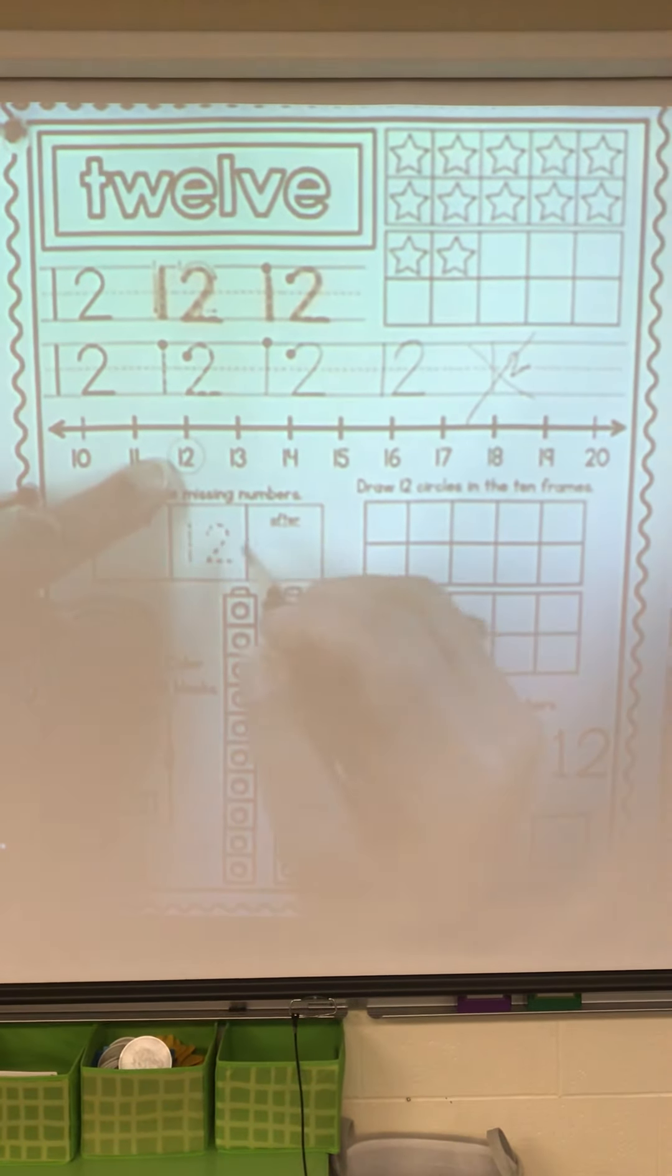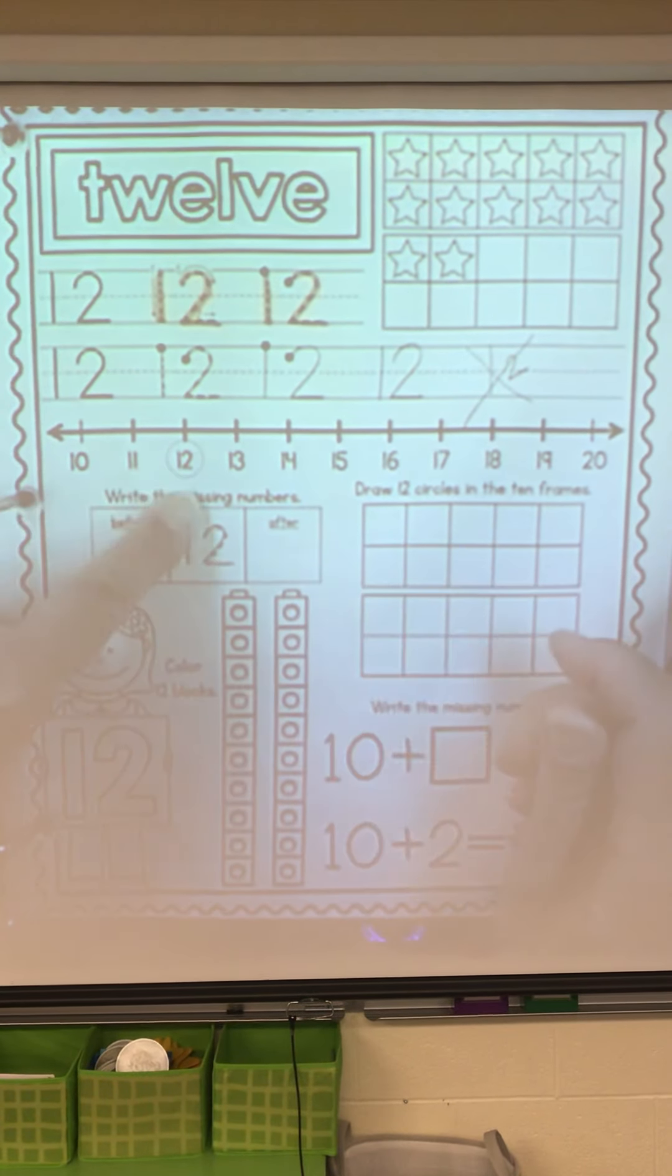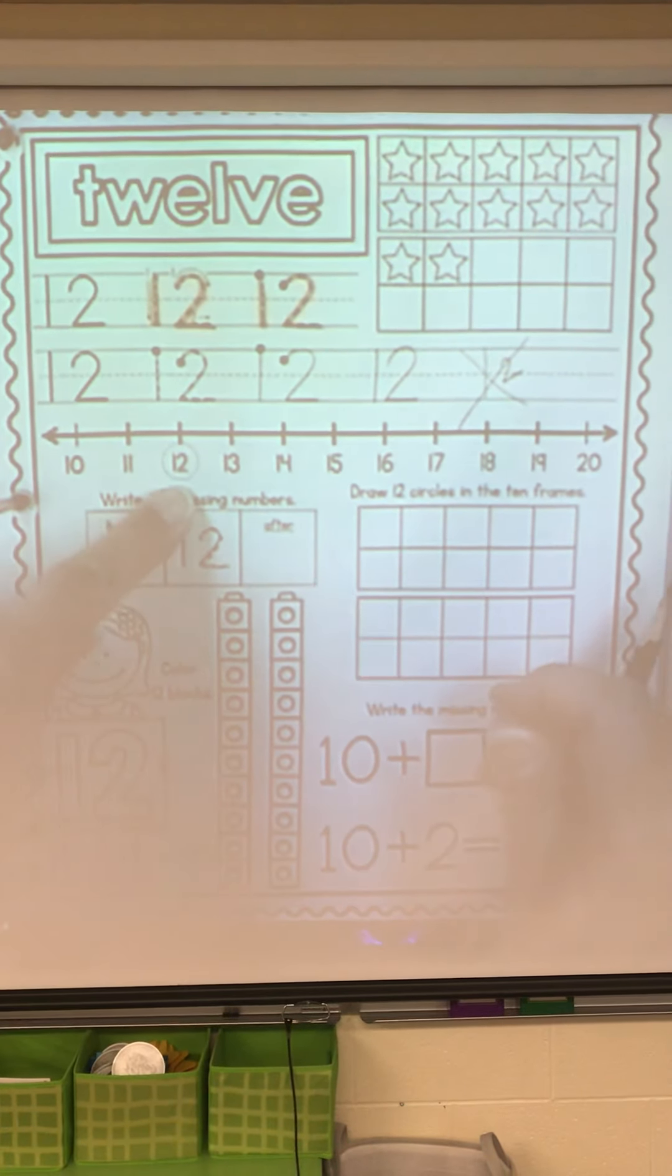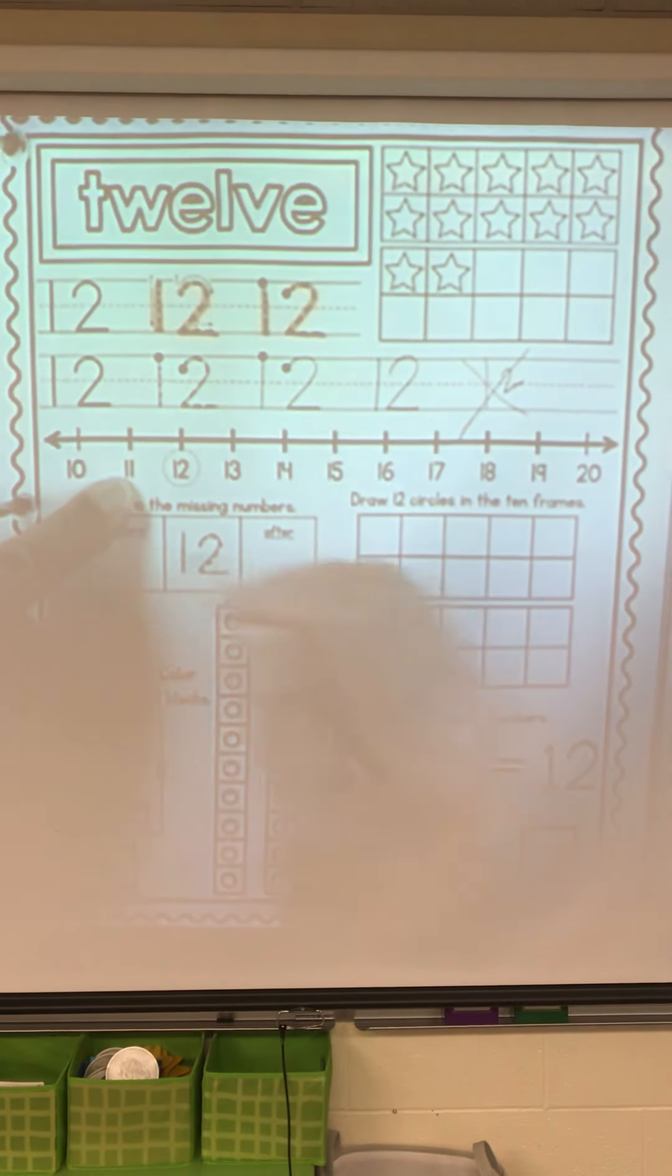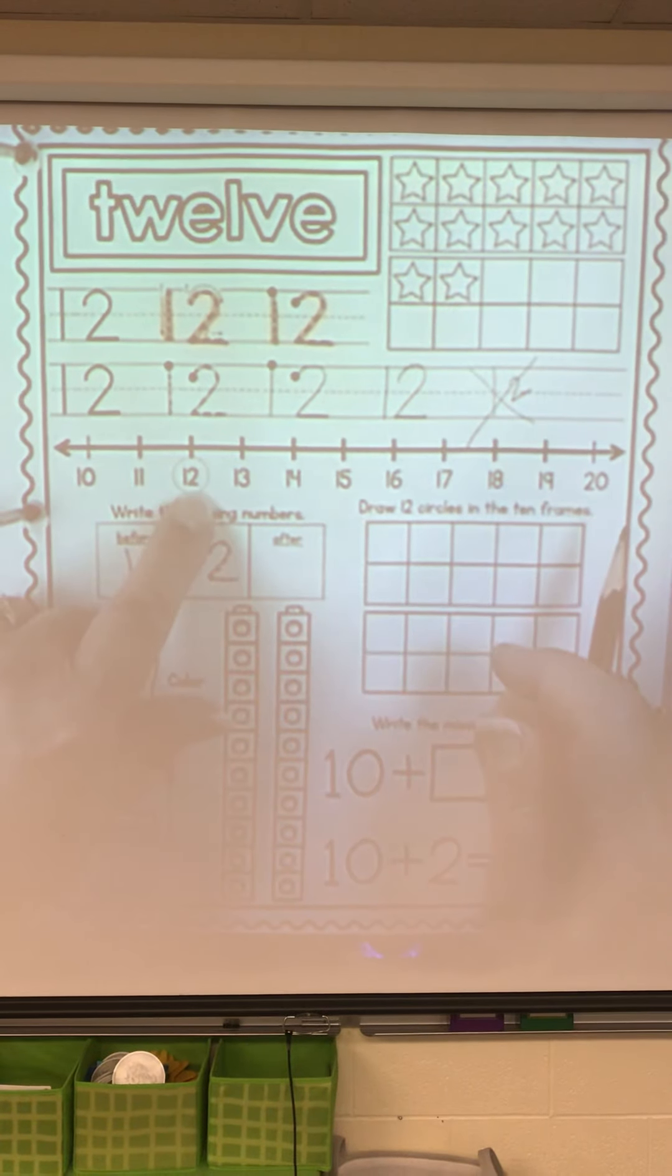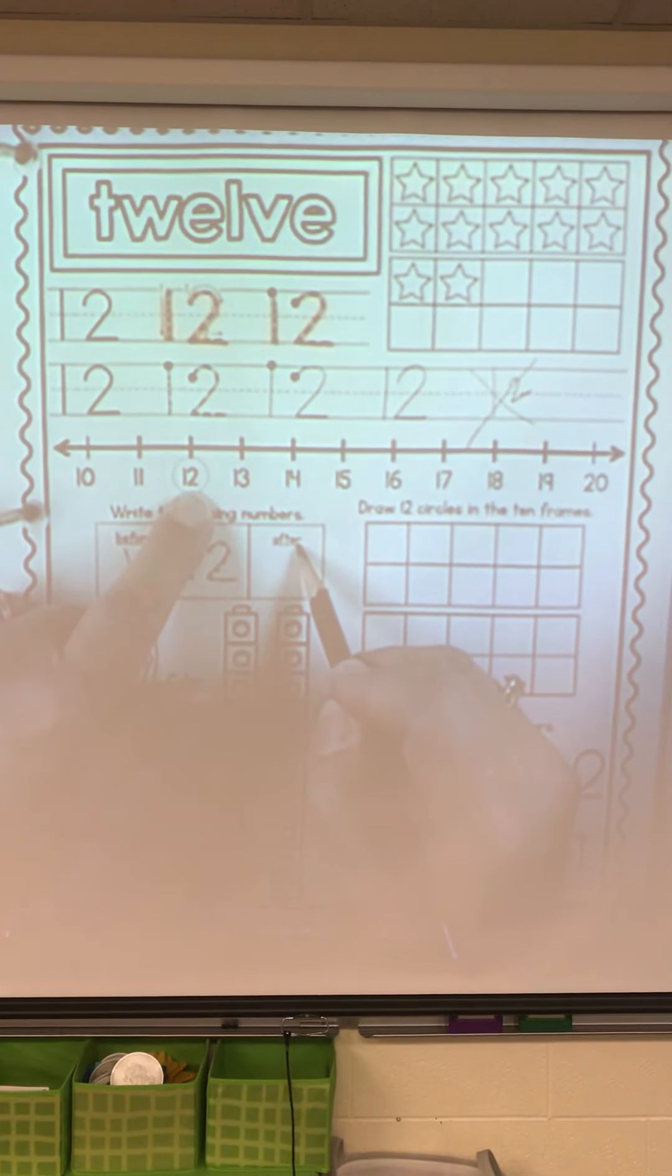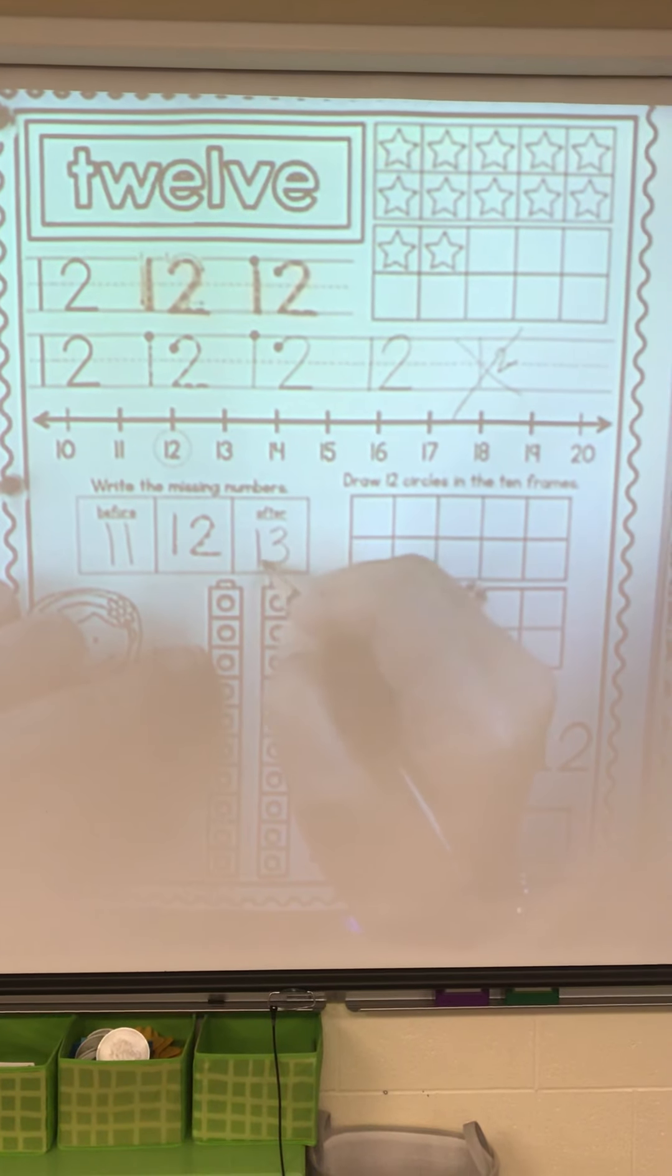And there's our 12. Trace the 12. Trace the 12 right here. And what number comes before 12? We'll go back. 11. What number comes after 12? 13. A 1 and a 3.